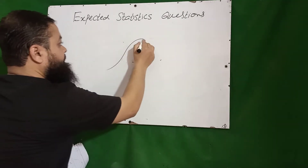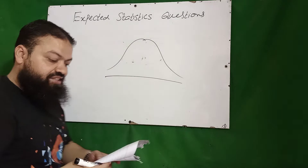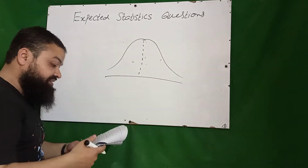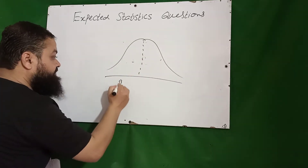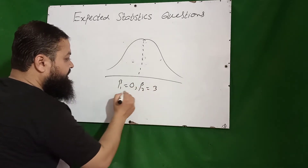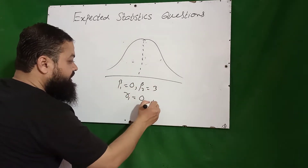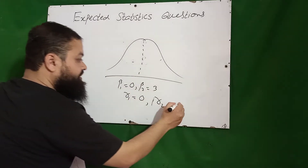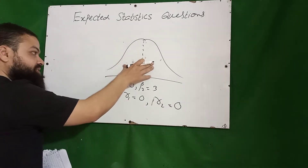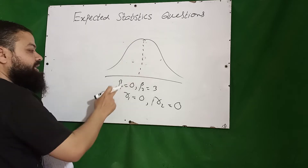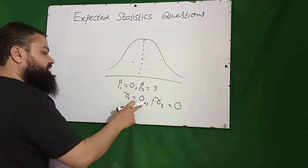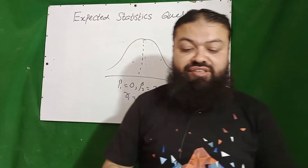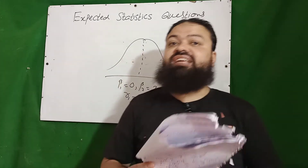The next question refers to a shape. If the question asks whether it is symmetrical — yes, it is symmetrical: both sides of that line are equal. It is normal also. Beta one is zero, beta two is three, gamma one (which is under root of beta one) is zero, and gamma two (beta two minus three = 3 minus 3) is zero. In that shape it is symmetrical, it is normal — all of these are correct.